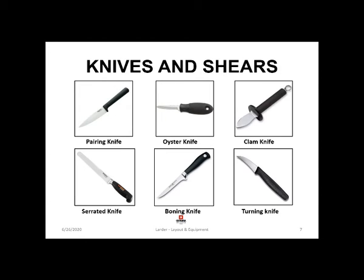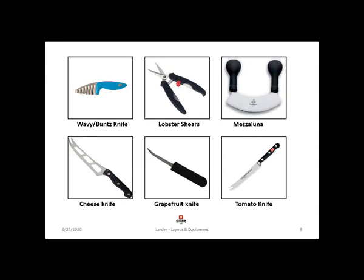Apart from large equipment, some of the knives and shears used in a larder are: paring knife, oyster knife, clam knife, filleting knife, honing knife, turning knife, boning knife, lobster shear, mezzaluna, cheese knife, grapefruit knife and tomato knife. As the larder department deals with various jobs, specific tools and equipment — even knives — are required to perform specific tasks. That is the reason various varieties of knives are used in larder kitchen.